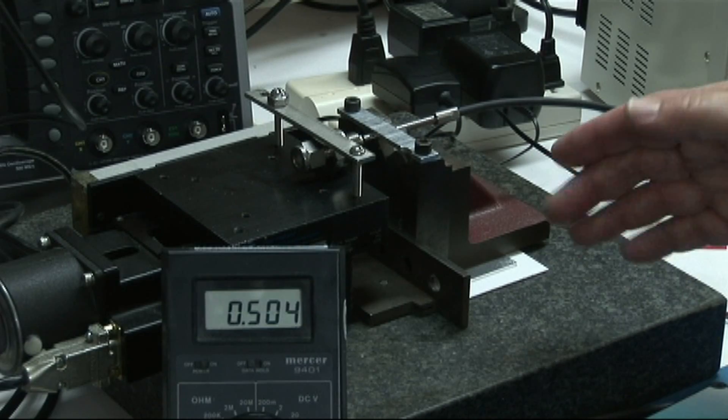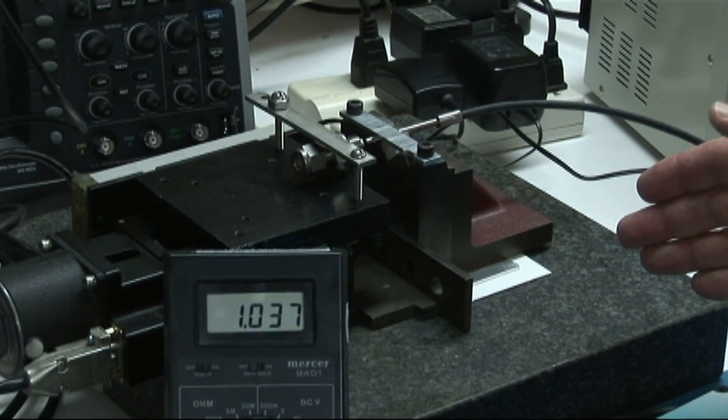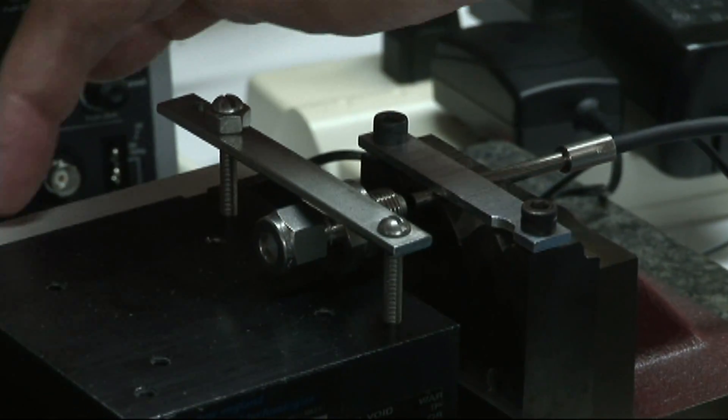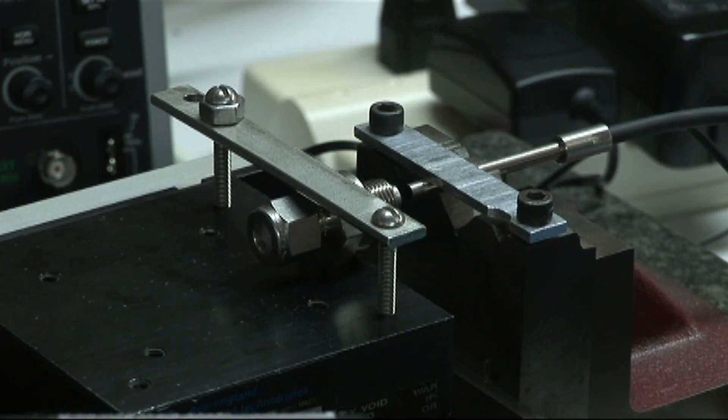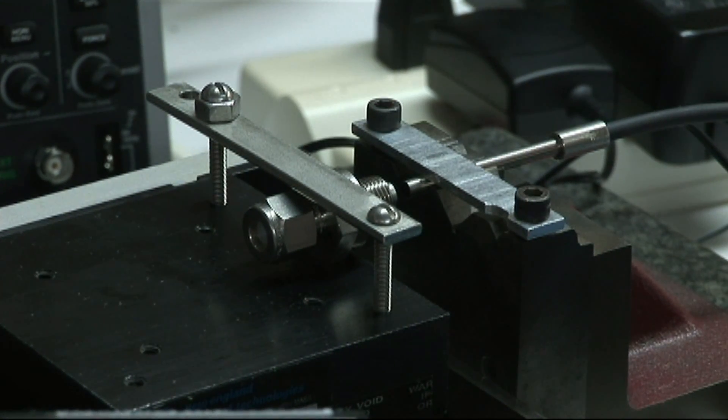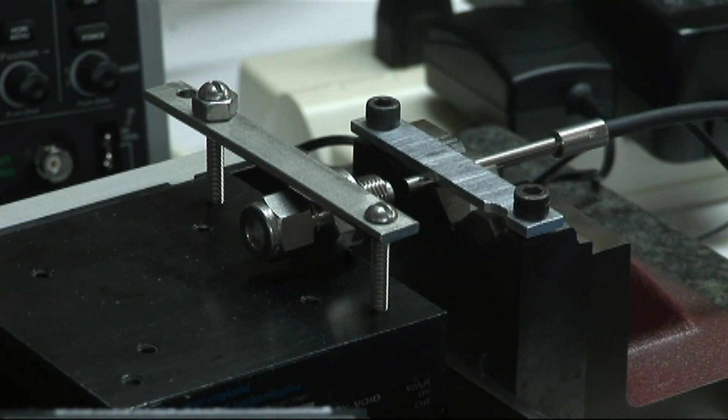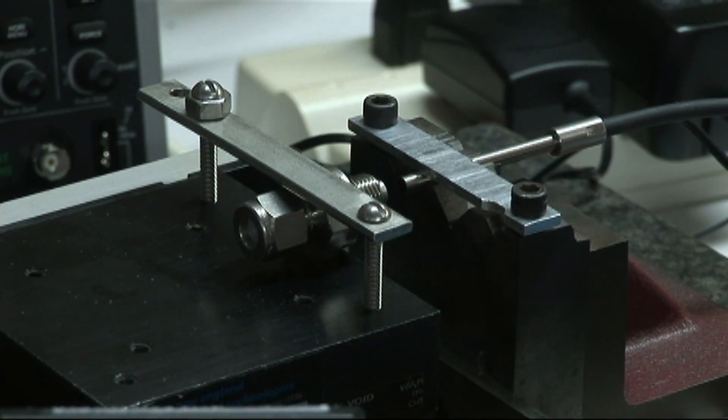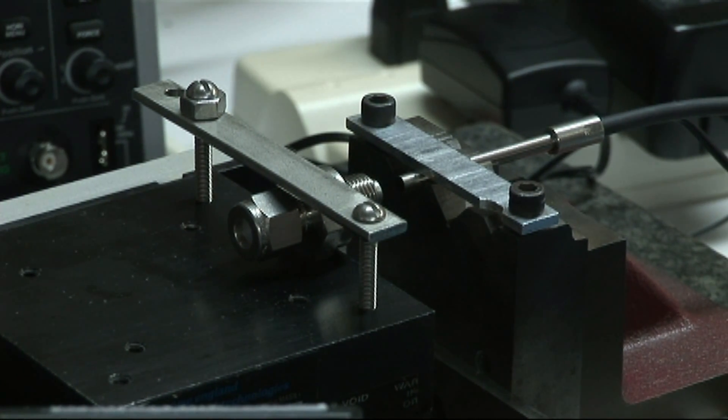So now you can see the stage is moving in steps. Each time the stage stops, we have a linear encoder on the side here, a four-micro-inch encoder. So the PC reads the sensor output and the stage encoder values at each step, and it's loading them into our file.